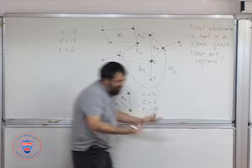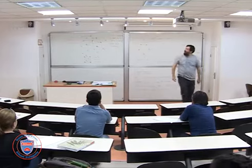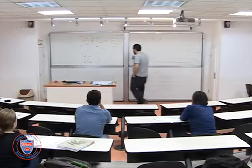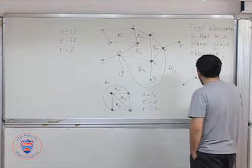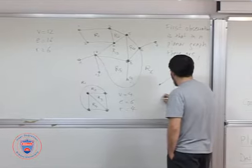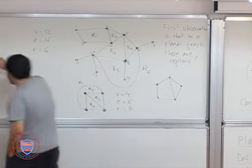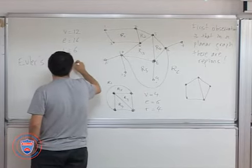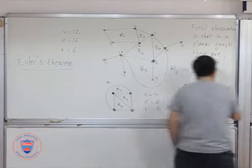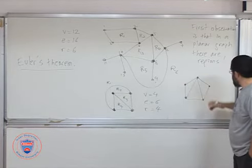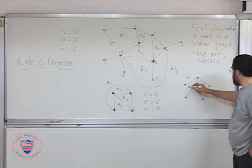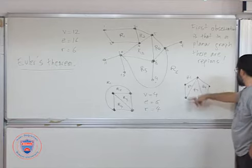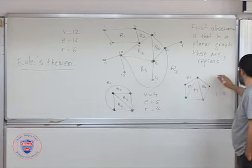So what Euler did, which makes a very good mathematician, is observe something with these numbers. We can actually draw a couple more. It's something that is very easy to observe. And it becomes Euler's theorem. So we can draw a couple more if you want. Like this is also planar. One region, two regions, four regions. One, two, five vertices.